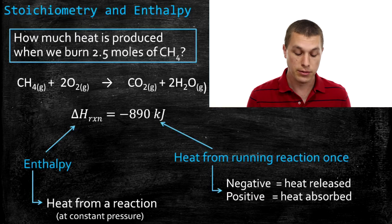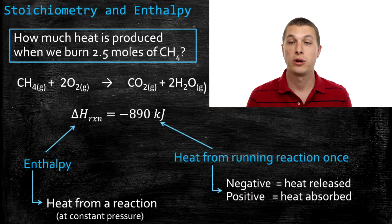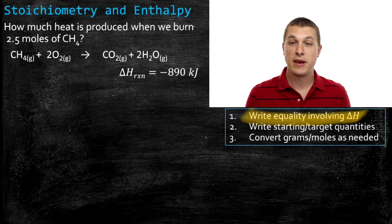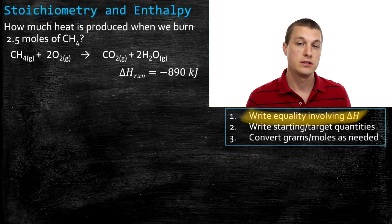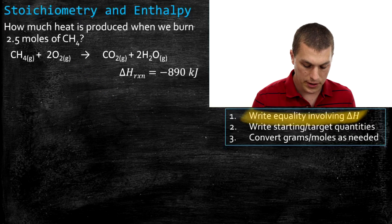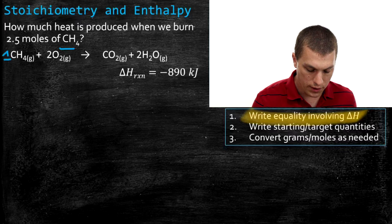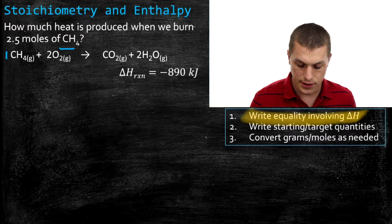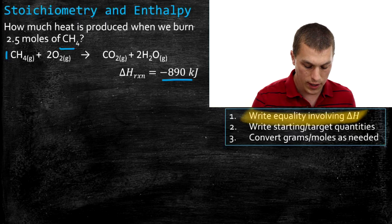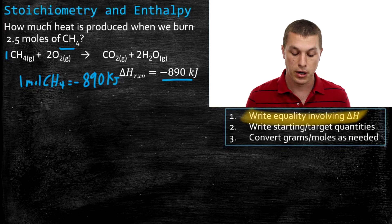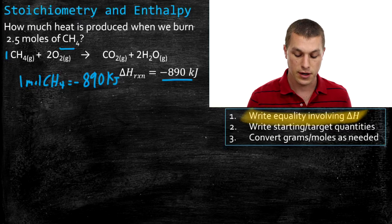Now we're going to solve some problems. Specifically, we're going to start off by calculating how much heat's produced when we burn 2.5 moles of methane. The very first thing we're going to do is write the equality involving delta H — basically how many moles of each reactant you need to burn to get off this quantity of heat. The question asks about methane, about CH4. We know that the number in front of CH4 is one, and we know that the heat of reaction is negative 890 kilojoules. So the equality I can write is: one mole of CH4 is equal to negative 890 kilojoules.